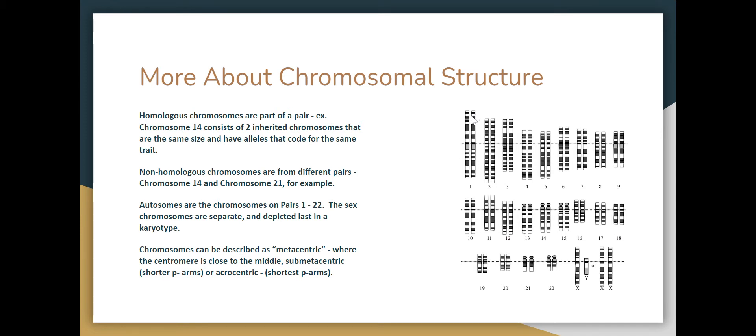A non-homologous chromosome: if we were to take a piece of chromosome one and stick it onto chromosome two, chromosome two is non-homologous — they're just from different pairs. So when I talk about translocations, this will make more sense because we'll put it into context. We use the word autosomes to describe the chromosomes on pairs one through 22. Anything that is not a sex chromosome is an autosome. Sex chromosomes are considered separate — we put them last in the karyotype, even though they're fairly large, just because they're different.